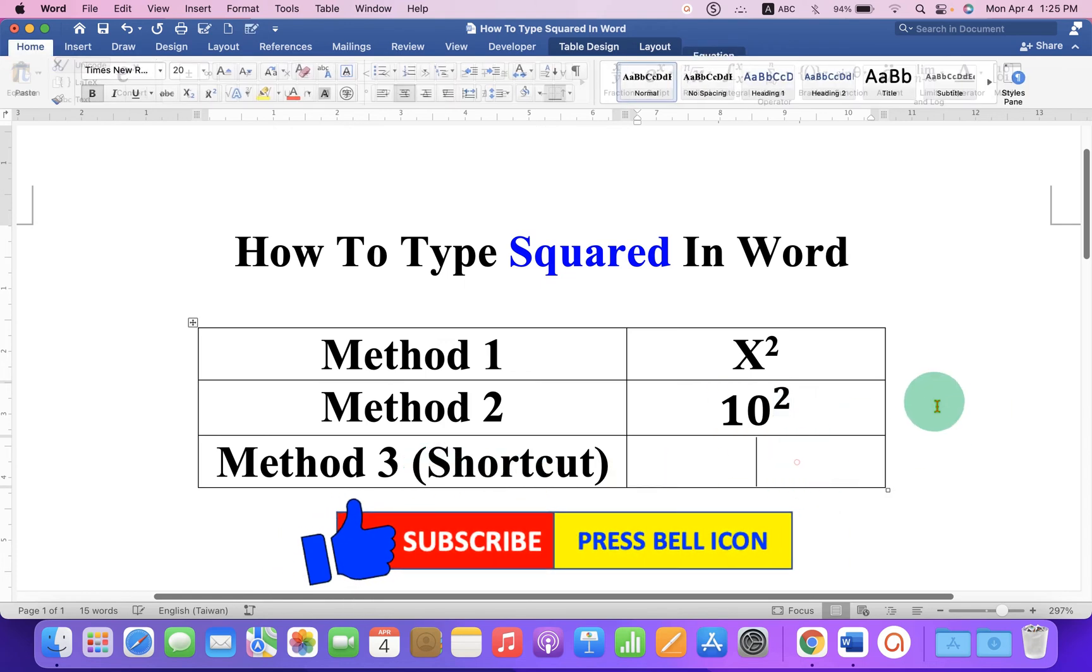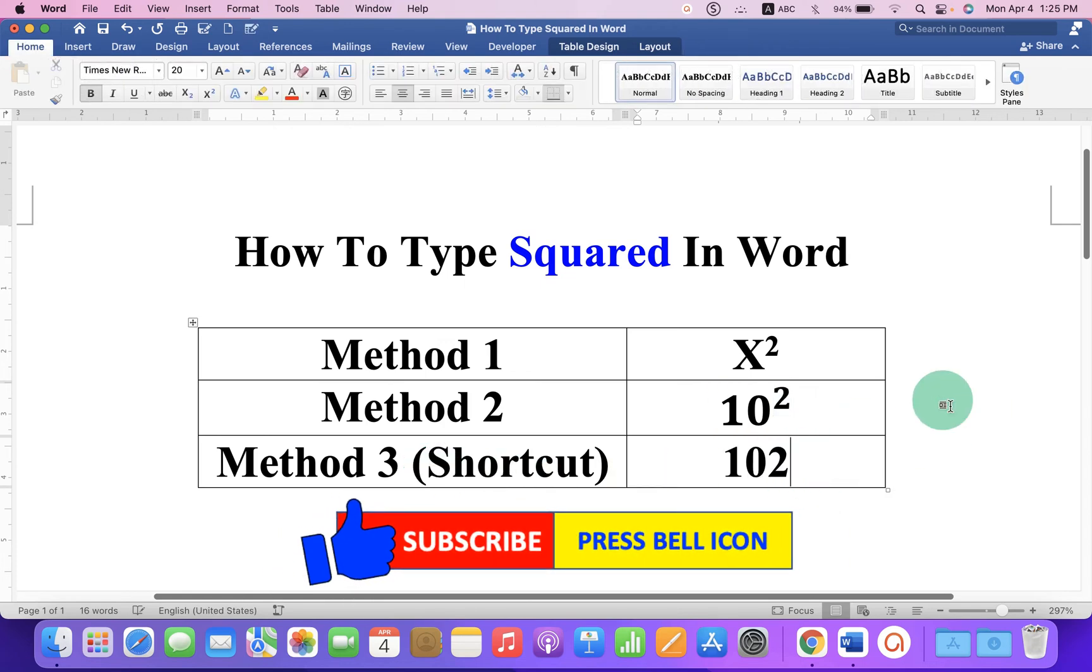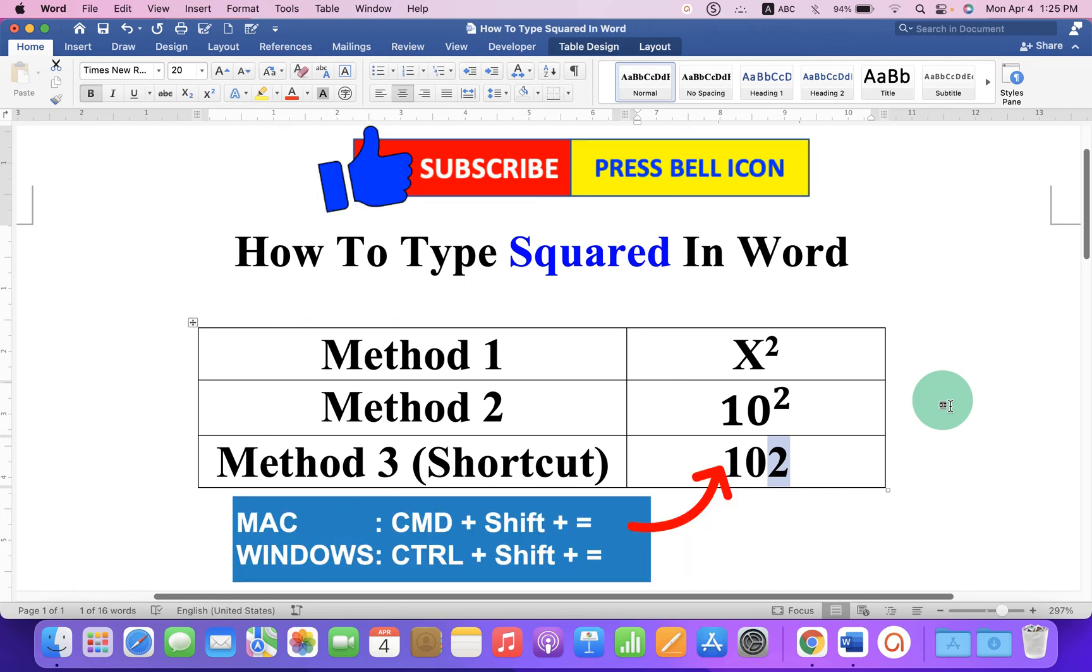The third method is a shortcut for Windows and Mac. After selecting the number 2, Mac users can use Command + Shift + Equal, and Windows users can use Control + Shift + Equal to get the superscript.